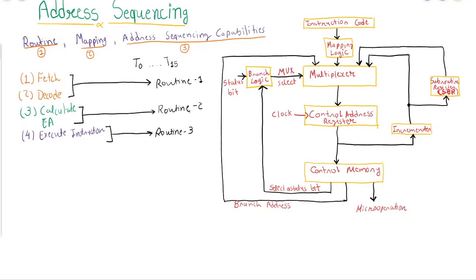If it is a register reference or I/O reference instruction, it will start with Routine 1 but there is no need to interact with memory, so it will skip Routine 2 and go directly to Routine 3. Recalling the instruction cycle, at T3 the I/O and register reference instructions are executed, while memory reference instructions are still in the calculate effective address phase. Most register reference and I/O instructions are single clock cycle instructions, so those will be executed in one step.